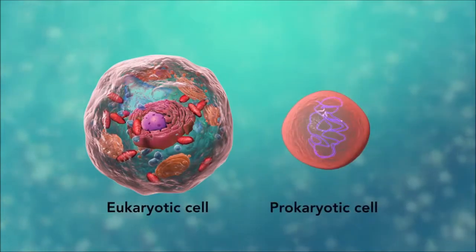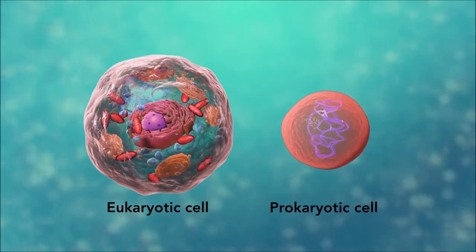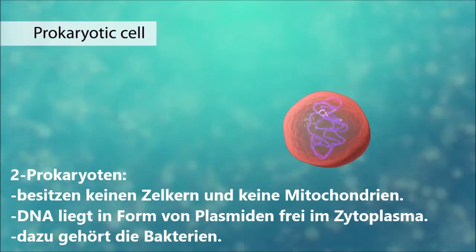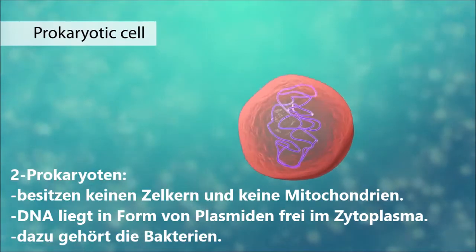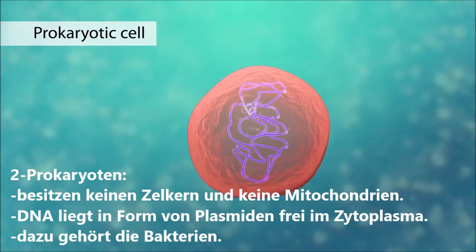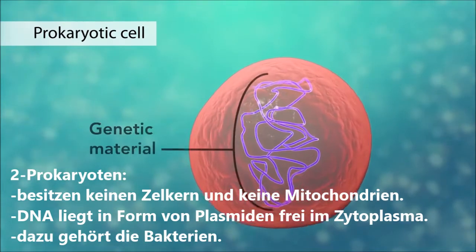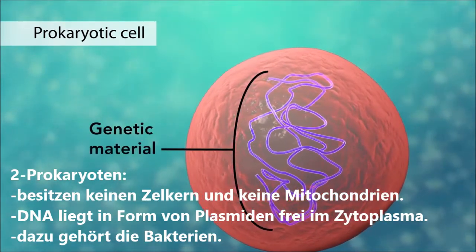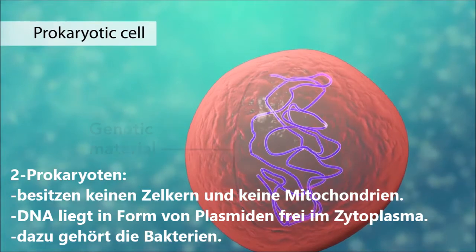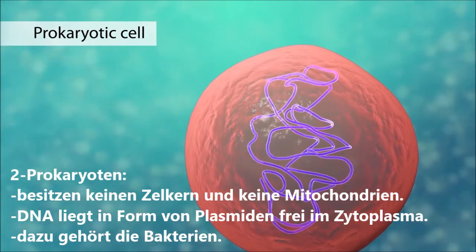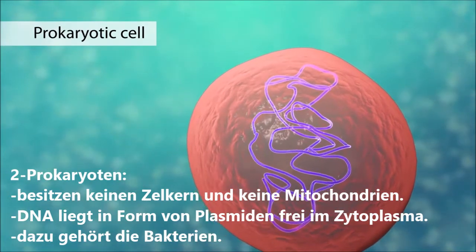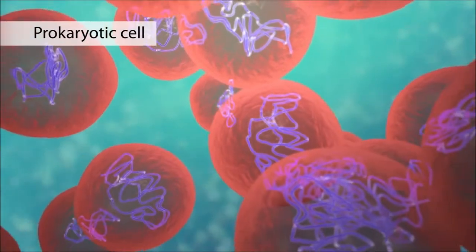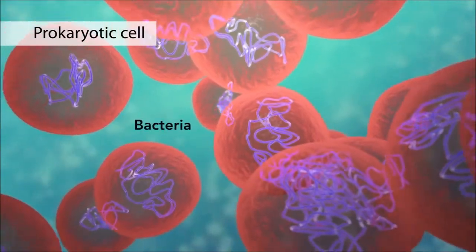The second category is prokaryotic cells. They don't have a nucleus or membrane-enclosed organelles. They do have genetic material, but it's not contained within a nucleus. Prokaryotic cells are always one-celled, or unicellular organisms, such as bacteria.